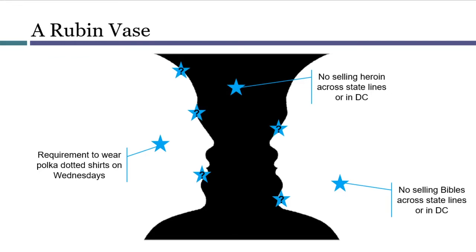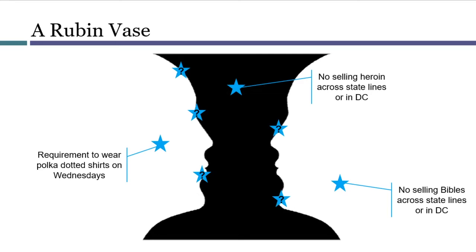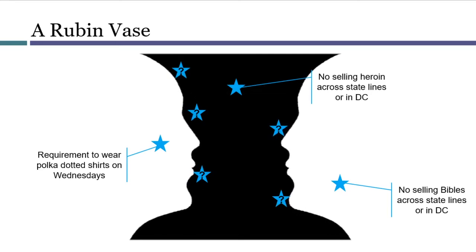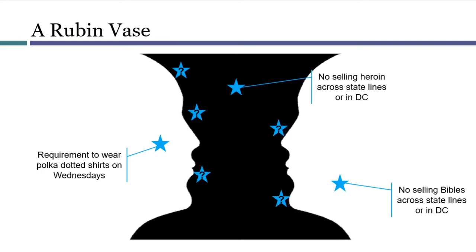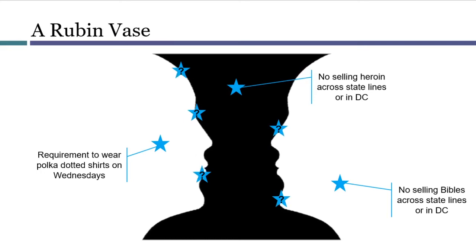These are debatable laws, and we can portray them as living along the edge of the vase and the edge of the faces. So if we decide that a law either is or is not constitutional, our understanding of where the edges are can change. This is shown by the vase and the faces changing size in comparison to each other — growing or shrinking.